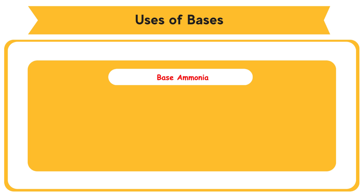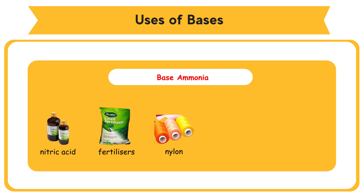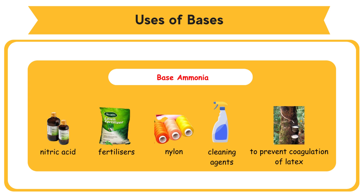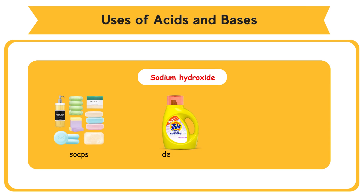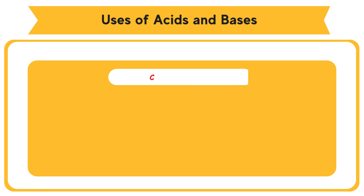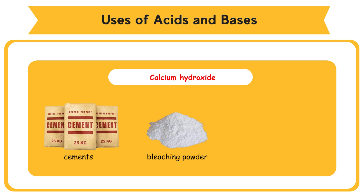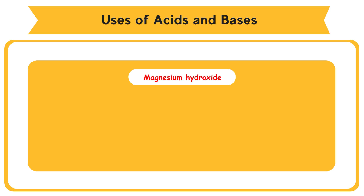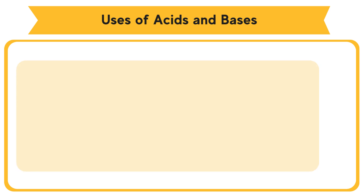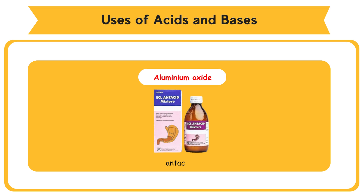Uses of bases: ammonia is used to make nitric acid, fertilizers, nylon, and cleaning agents, and to prevent coagulation of latex. Sodium hydroxide is used to make soaps, detergents, and bleaching agents. Calcium hydroxide is used to make cements, bleaching powder, and to neutralize acidity in soils. Magnesium hydroxide is used to make toothpaste and antacids. Aluminium oxide is used to make antacids.